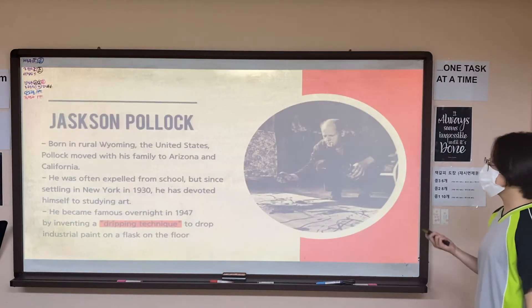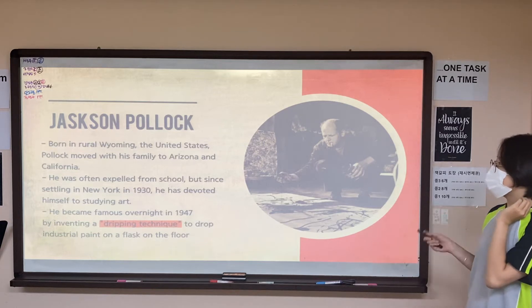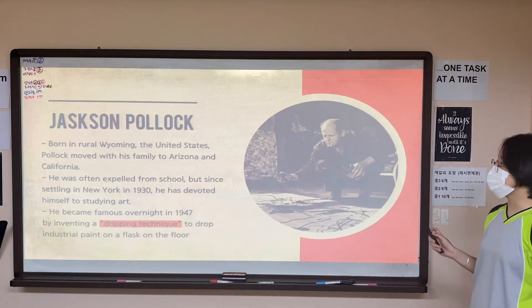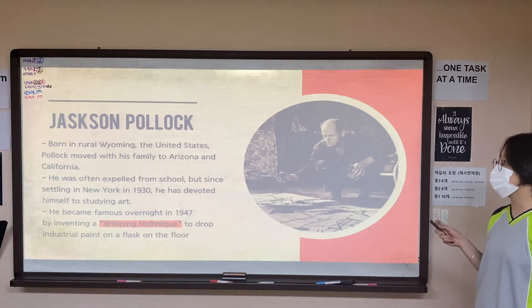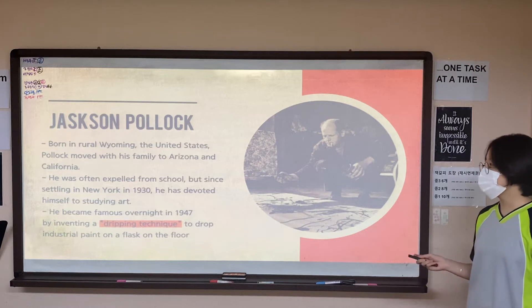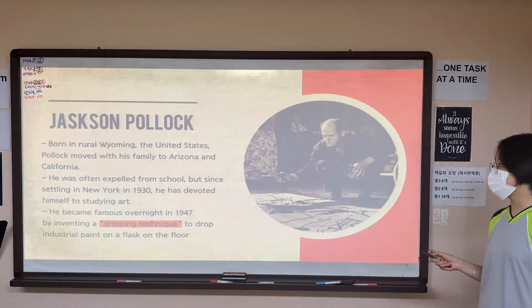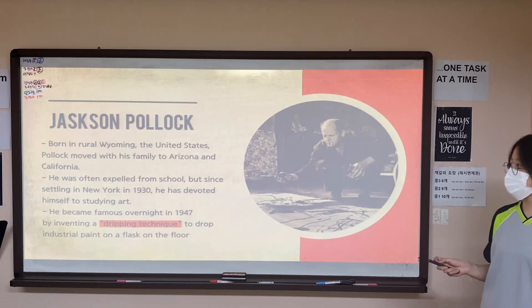Jackson Pollock was born in rural Wyoming, the United States, and he moved with his family into Arizona and California. He often expelled from school, but since he settled in New York in 1930,